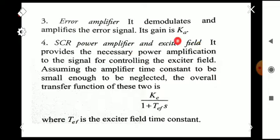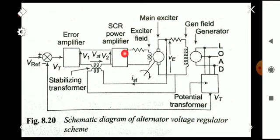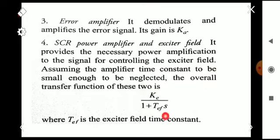The SCR power amplifier and exciter field together provide the necessary power amplification to the error signal for controlling the exciter field. Assuming the amplifier time constant is small enough to be neglected, the overall transfer function of these two devices can be written as Ke / (1 + Tef·s), where Tef is the exciter field time constant.